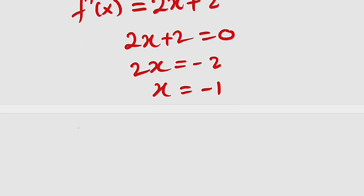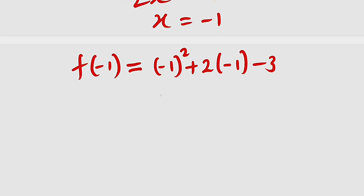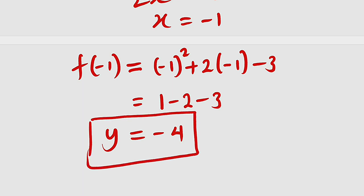But we are not looking for x — rather the value of y at that point. So we are going to substitute it into the main function. That is f(−1) = (−1)² + 2(−1) − 3. Negative 1 squared is positive 1. 2 times negative 1 is minus 2, then minus 3. 1 minus 2 is minus 1, minus 3 is minus 4. So this is equal to minus 4. It means that y at that point is minus 4. This is the first method.